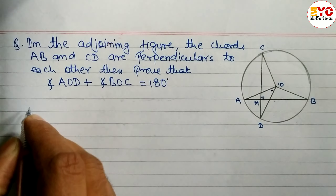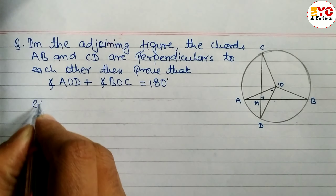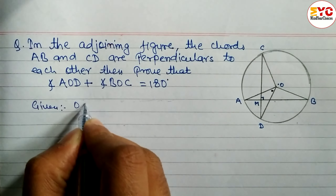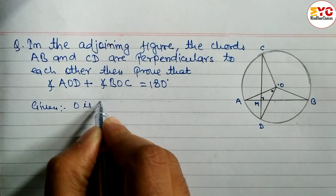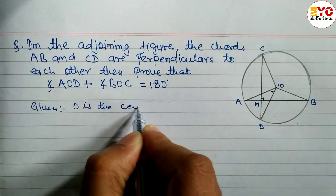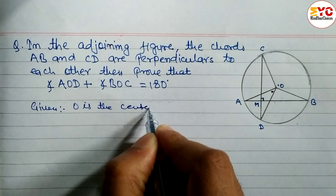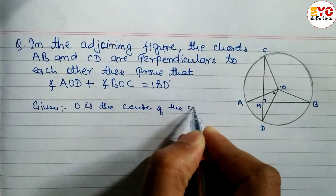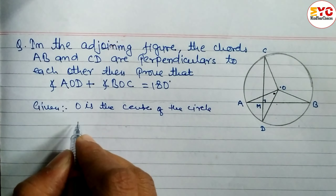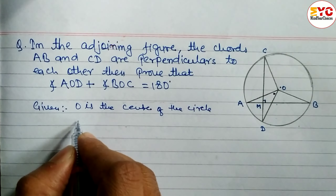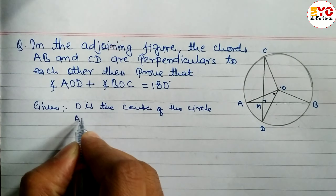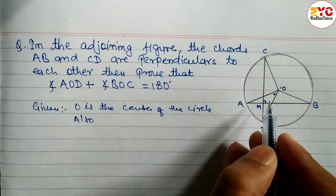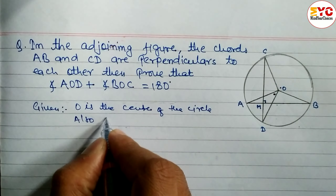Under 'Given', we write: O is the center of the circle. After that, two lines are perpendicular — AB and CD are perpendicular.